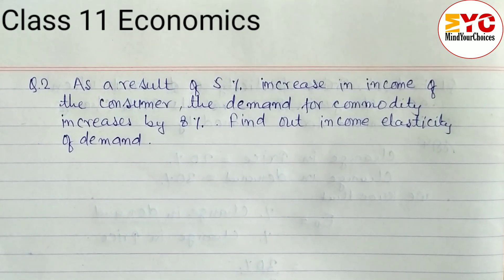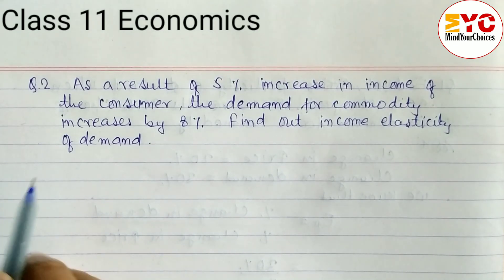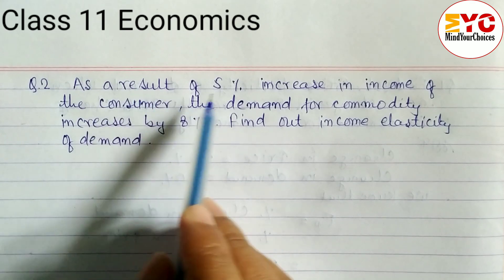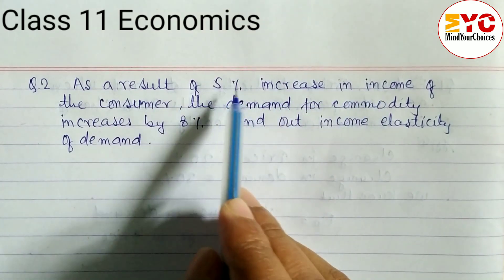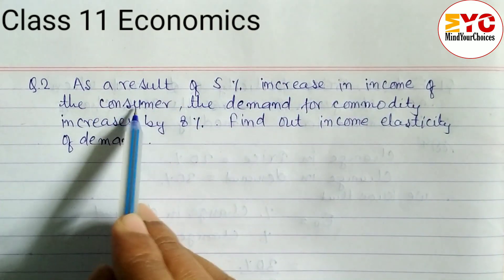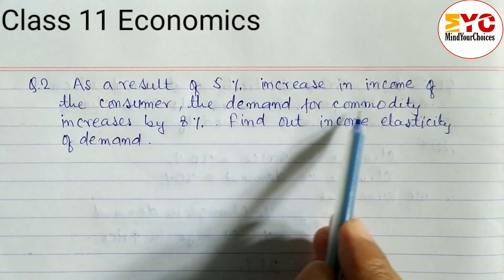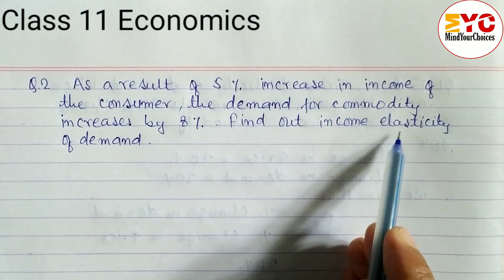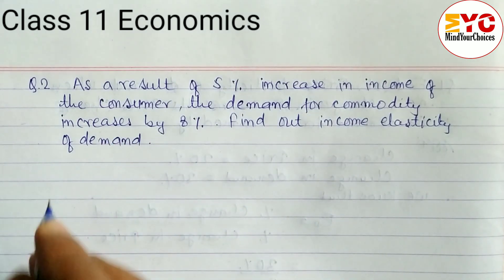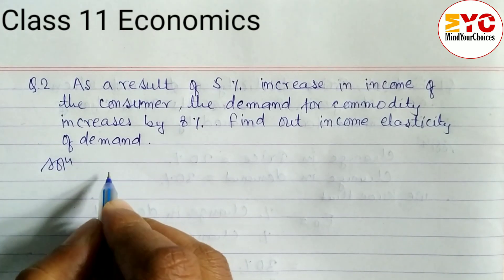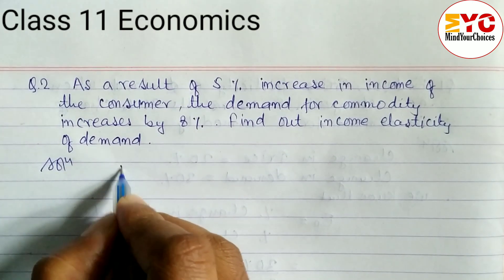We have a numerical question related to elasticity of demand and supply. As a result of a 5% increase in income of the consumer, the demand of the commodity increases by 8%. Find out the income elasticity of demand.